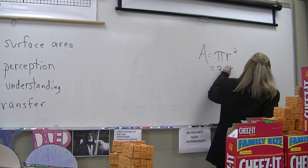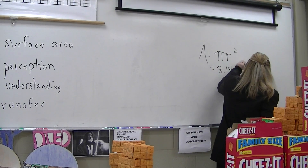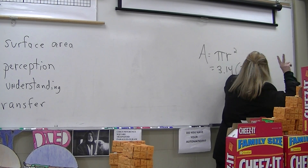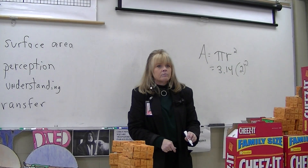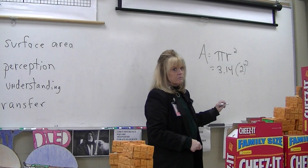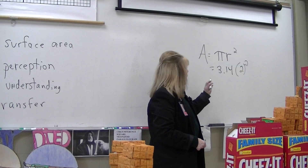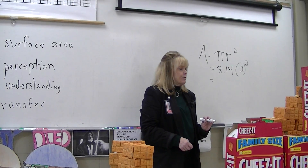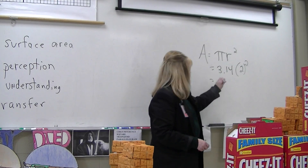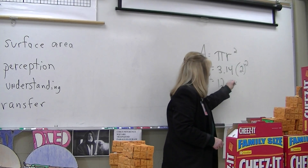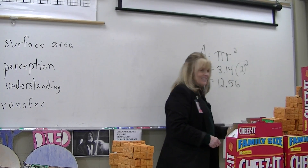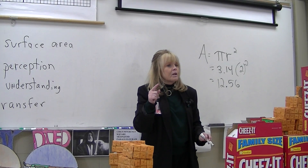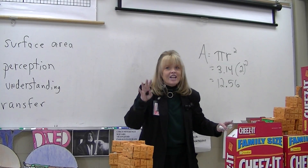Pi is 3.14, and the radius is 2. What's 2 squared? 4. And 4 times 3.14 — you've done that a thousand times. The answer is 12.56. So the area is 12.56 square inches.